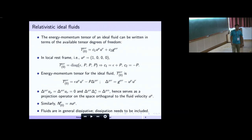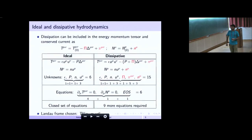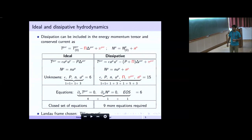Fluids are in general dissipative in nature, and one needs to include dissipation. For ideal hydro, we have energy density, pressure, and three independent components of u^μ, plus number density — six independent variables. The conserved equations are five: one conserved current and four from the energy-momentum tensor, and with equation of state it's closed. However, for dissipative hydro we have bulk viscosity, viscous pressure, shear stress tensor, and dissipative contribution to charge current — leading to nine unknowns that must be determined.